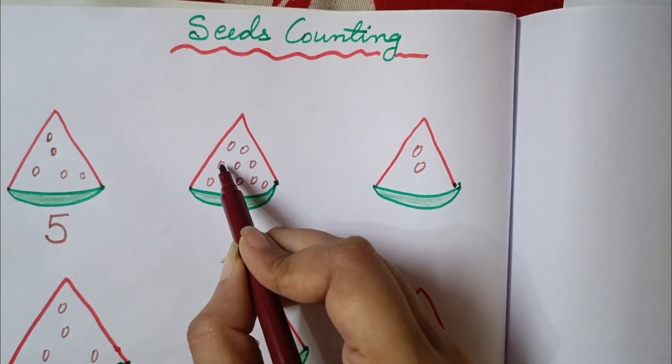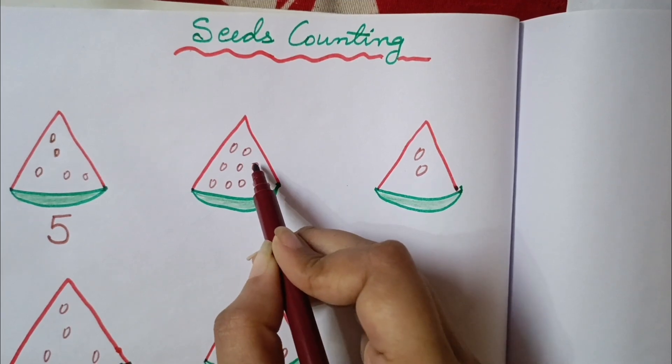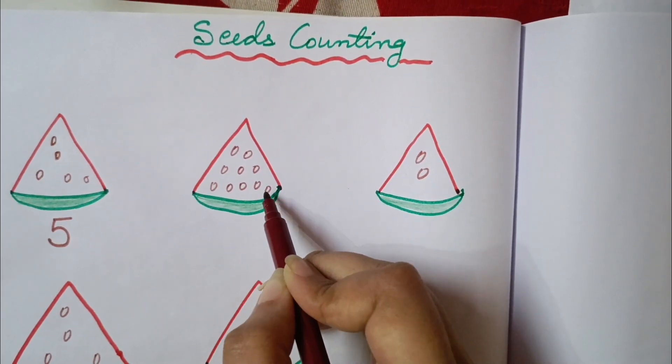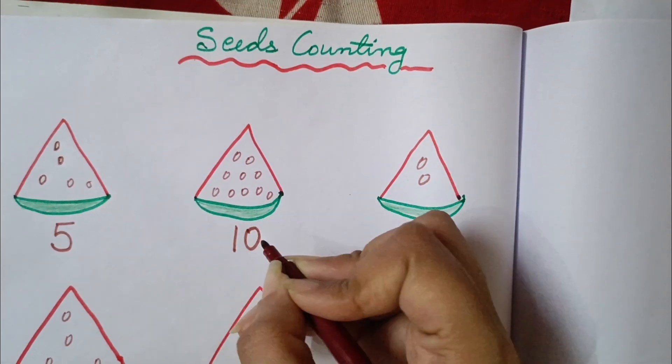Next 1, 2, 3, 4, 5, 6, 7, 8, 9, 10. This watermelon has 10 seeds. So we will write 1, 0, 10.